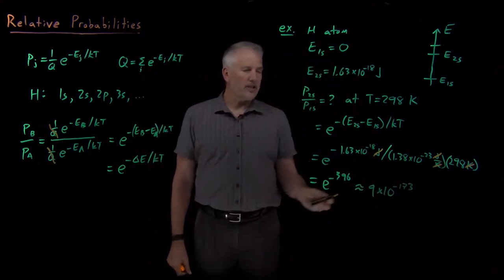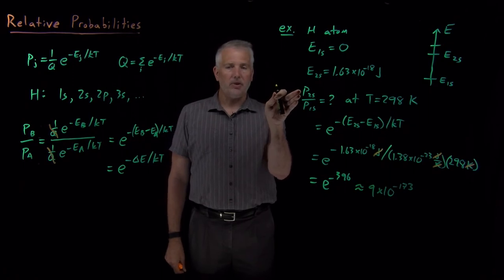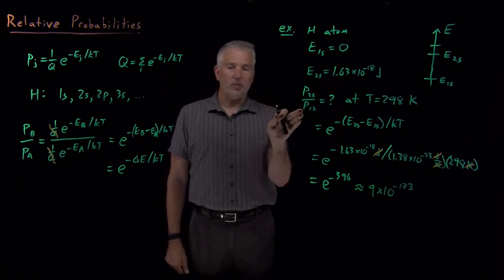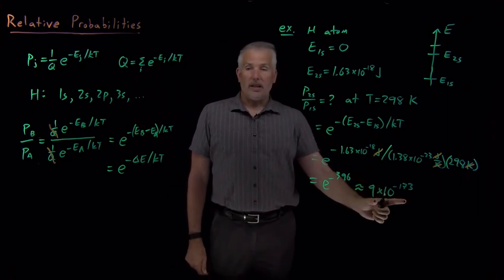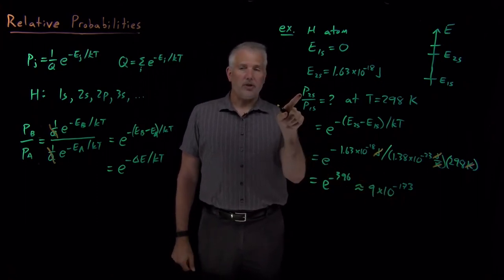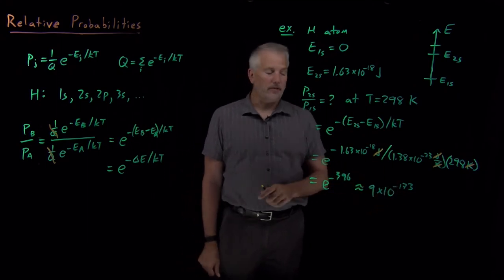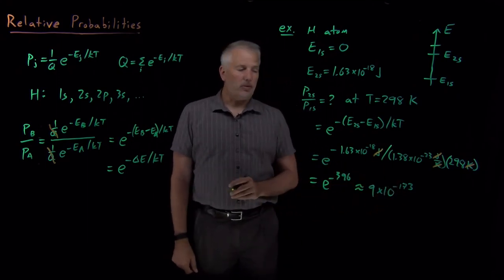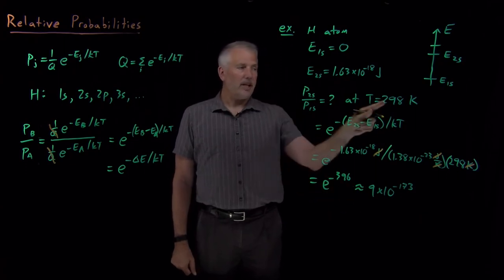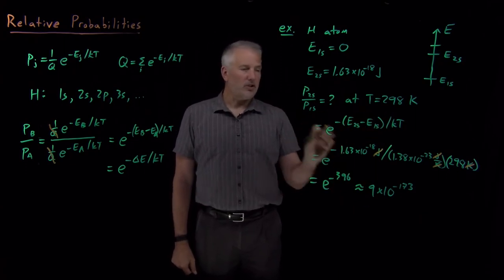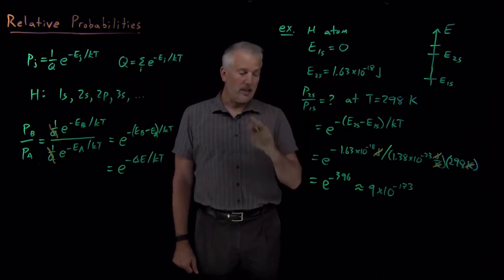The numerical result is approximately 9 times 10 to the minus 173. So how likely is it to find an electron in the 2s orbital relative to the 1s orbital? Very unlikely. You would find it in the 2s orbital only about once out of every 10 to the 172 or 10 to the 173 hydrogen atoms. Almost never — at 298 Kelvin, an electron is almost always found in the 1s state.